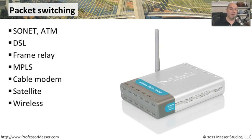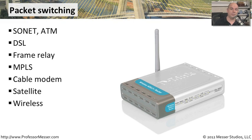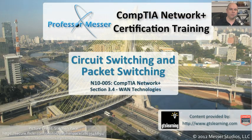Common types of packet switch networks include SONET, ATM, DSL, Frame Relay, MPLS, Cable Modem, and Wireless. You've got a lot of different ways to packetize your data and send it out over those networks. This is why some of these newer networking types have become so much more popular — because you have the ability to do packet switching over them rather than circuit switching.